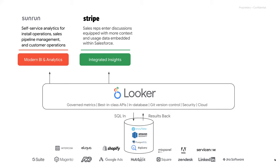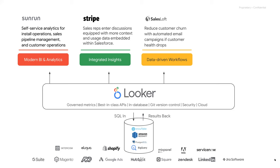In modern analytics, traditional BI reporting and dashboarding is just part of the picture. It's also about integrating insights right into where people use data. A good example is Stripe — their reps have Looker data embedded directly in their Salesforce instance, because that's where they work. Insights are integrated right where teams need them. Additionally, workflows can be enhanced by data — organizations like SalesLoft use it to reduce churn and automate campaigns.